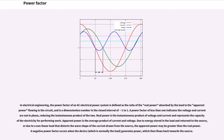Real power is the instantaneous product of voltage and current and represents the capacity for performing work. Apparent power is the average product of current and voltage. Due to energy stored in the load and returned to the source, or due to a non-linear load that distorts the wave shape of the current drawn from the source, the apparent power may be greater than the real power. A negative power factor occurs when the device generates power, which then flows back towards the source.